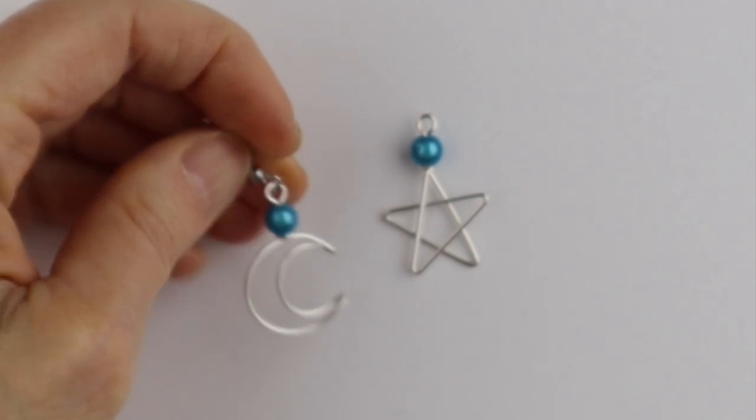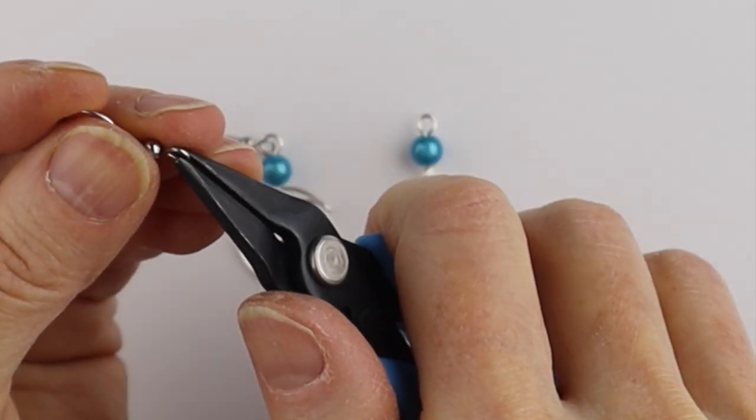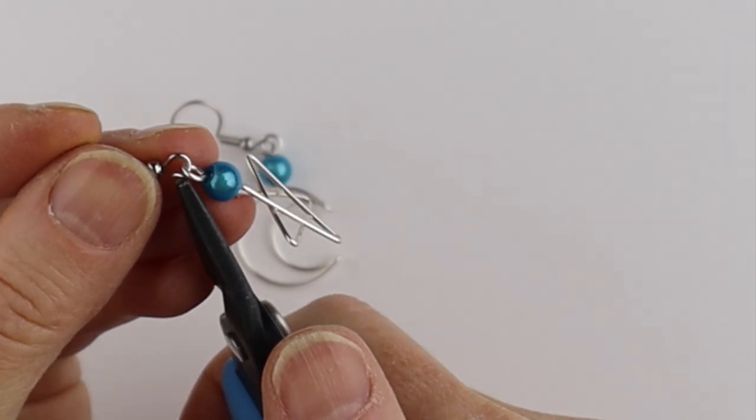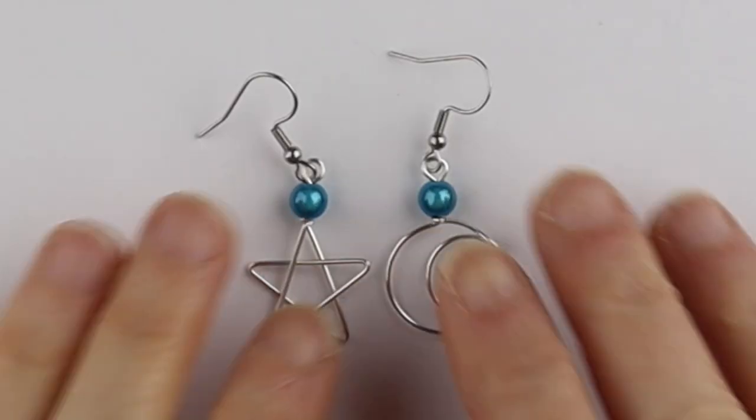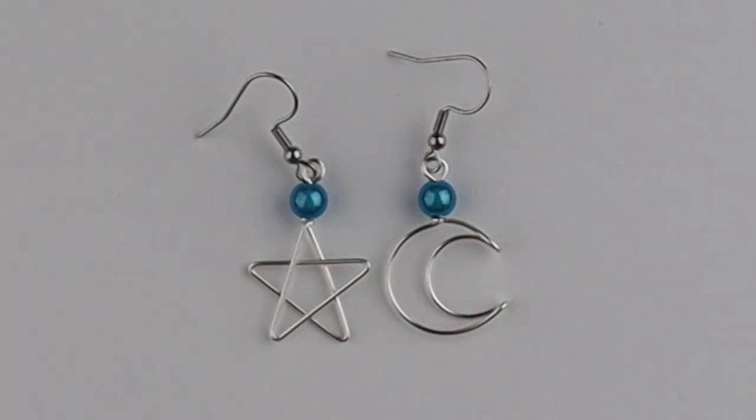All we have to do now is add the hooks. I buy these little surgical steel shepherd's hooks. We're going to open it up, stick it in there. And there you have your very fun star moon earrings.